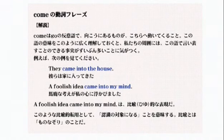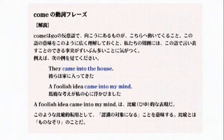カムはゴーの範囲語で、向こうにあるものがこちらへ動いてくる、つまり現れ出る、出現なんですね。このように広く理解しておくと、カムの応用範囲、守備範囲がわかります。